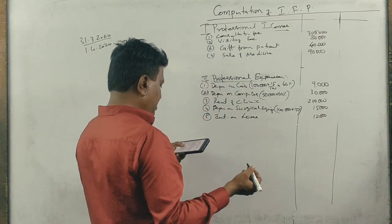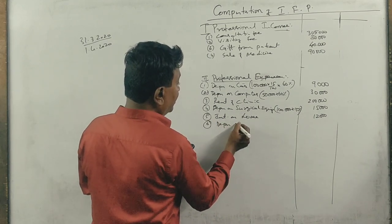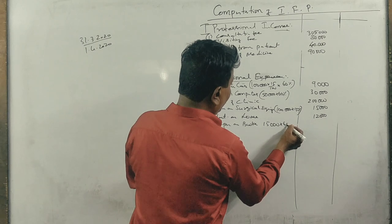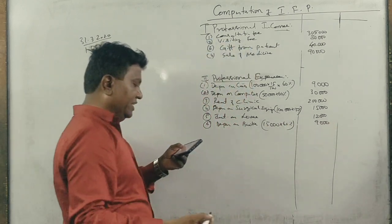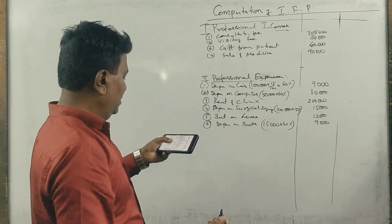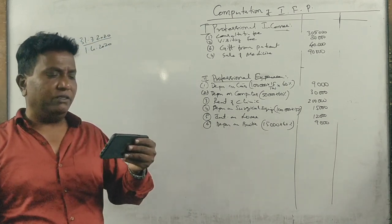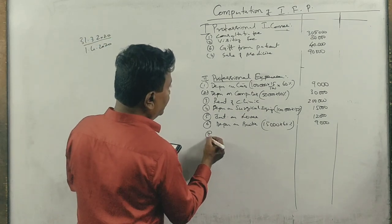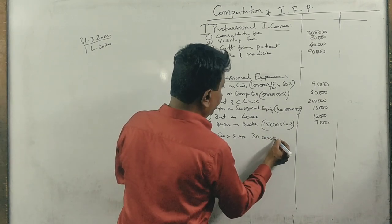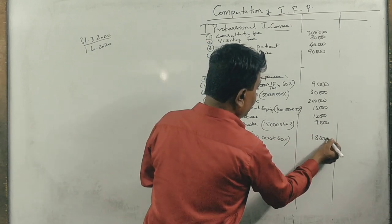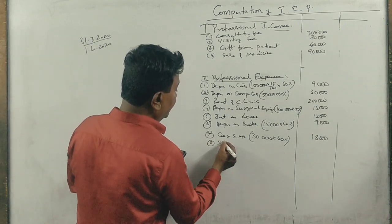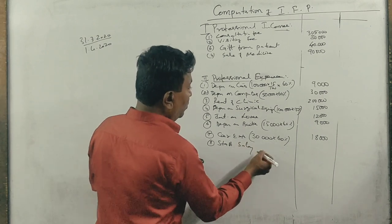Correct. Next, depreciation on books, 60%. Next, purchase of car depreciation. Next, household, income tax. Car expenses, 30,000 into 60% equals 18,000. Next, salary 1,20,000.